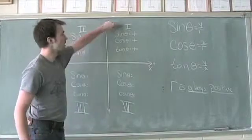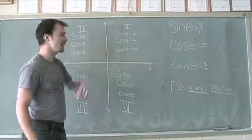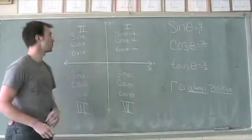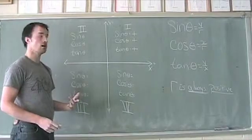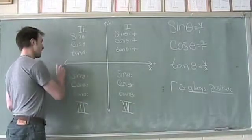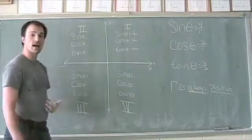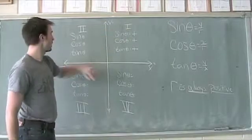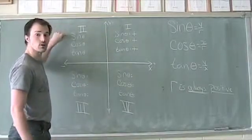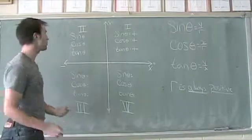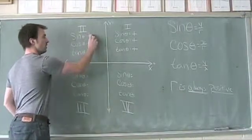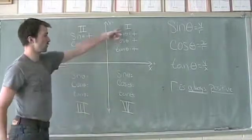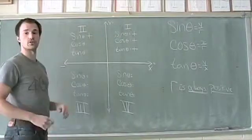So in summary, quadrant 1 has sine, cosine, and tangent values that are all positive. Moving on to quadrant 2 — the only thing that's different is that now the x value is negative, and that's going to affect us in a couple of ways. Looking at sine theta, which is y divided by r, the y value in quadrant 2 is still positive, so it's a positive divided by a positive, giving a positive value. So sine theta is positive not only in quadrant 1 but also in quadrant 2.